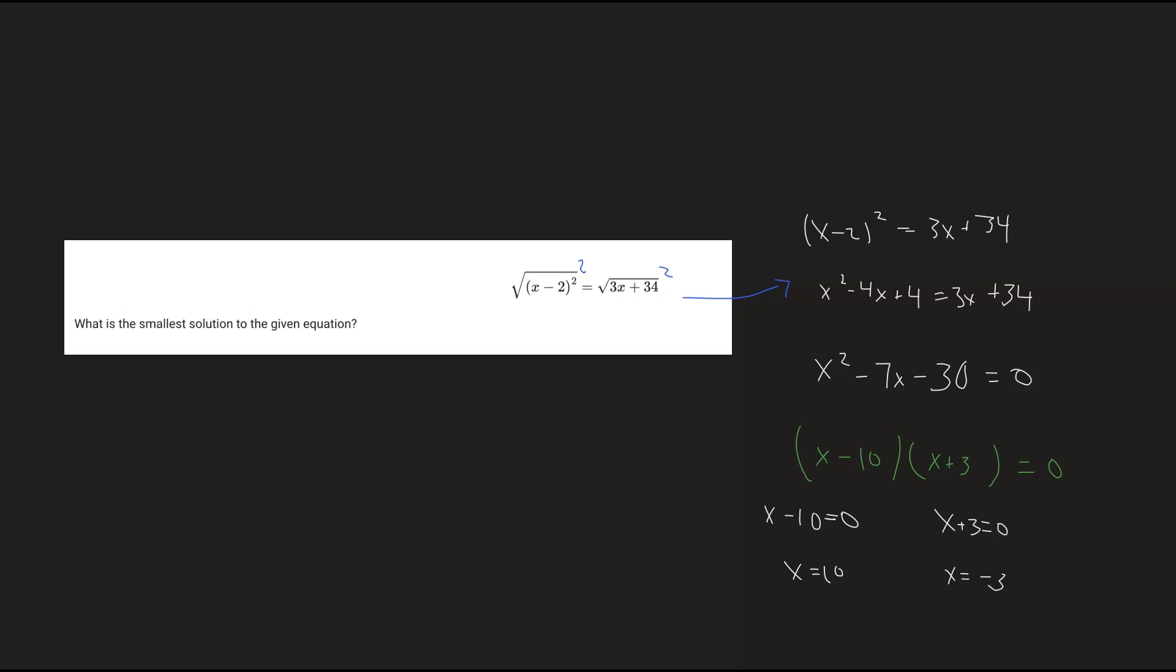It wants the smallest solution to the given equation. We can clearly see that negative 3 is smaller than positive 10, and therefore negative 3 is going to be our answer.